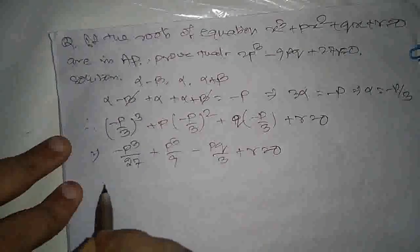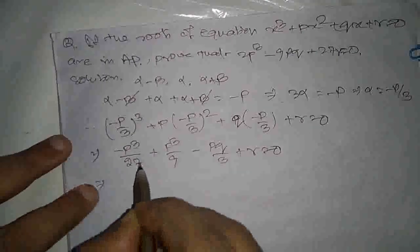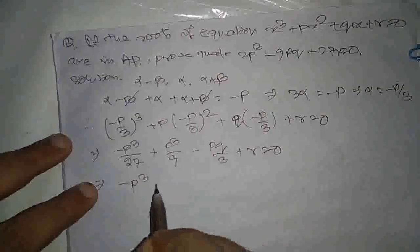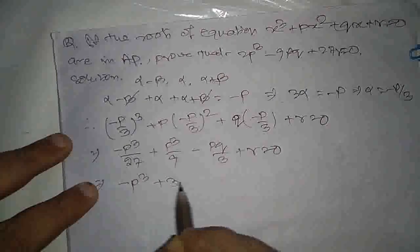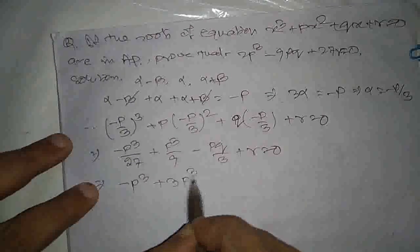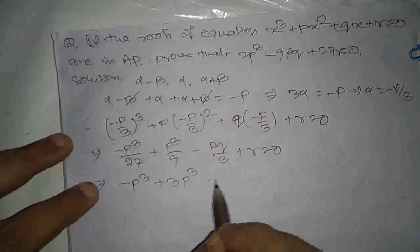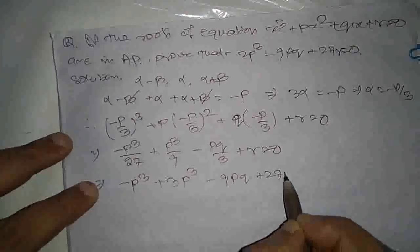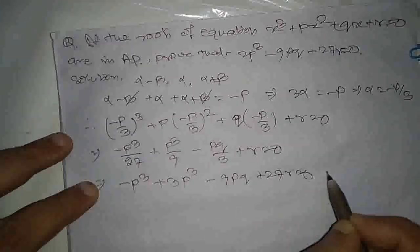Multiplying everything by 27, we get minus p³ plus 3p³ minus 9pq plus 27r equal to 0.